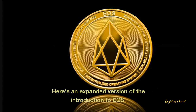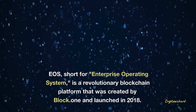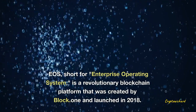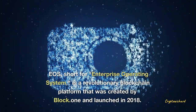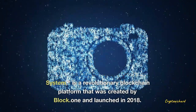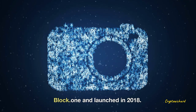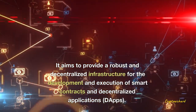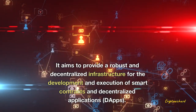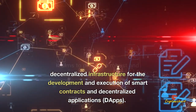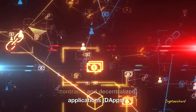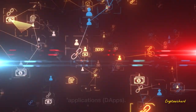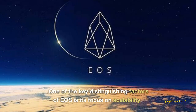Here's an expanded version of the introduction to EOS. EOS, short for Enterprise Operating System, is a revolutionary blockchain platform that was created by Block.one and launched in 2018. It aims to provide a robust and decentralized infrastructure for the development and execution of smart contracts and decentralized applications, dApps. One of the key distinguishing factors of EOS is its focus on scalability.